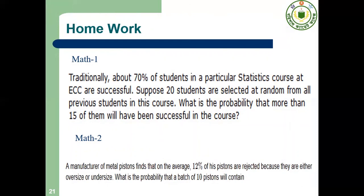Homework: Math 1 — traditionally about 70 percent of students in a particular statistics course at ECC are successful. Suppose 20 students are selected at random from all previous students in this course. What is the probability that more than 15 of them will have been successful? Math 2 — a manufacturer of metal pistons finds that on the average 12 percent of his pistons are rejected because they are either oversized or undersized. What is the probability that a batch of 10 pistons will contain a certain number of rejections?